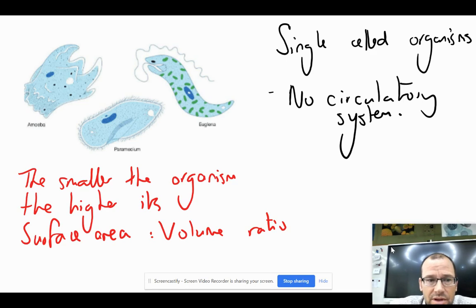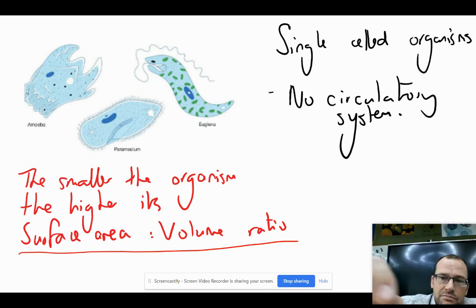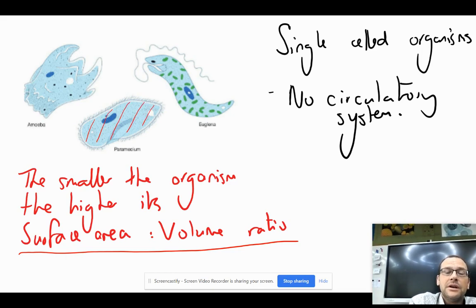Well, the smaller the organism is, the higher its surface area to volume ratio. Which means if we take the volume, the surface area with that volume, there is a lot of surface per unit of volume.